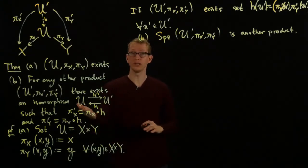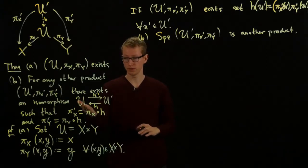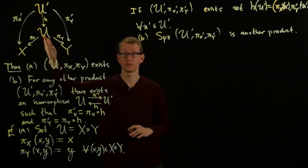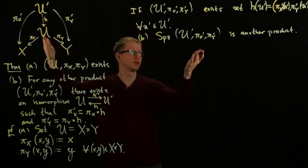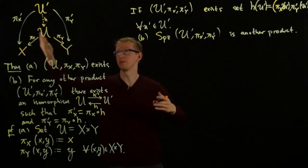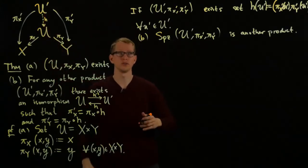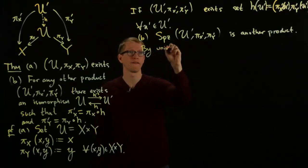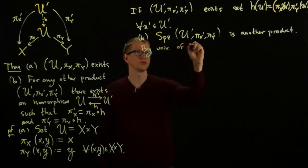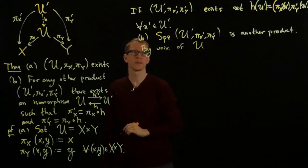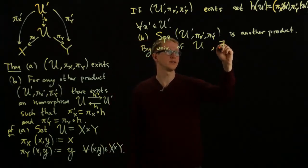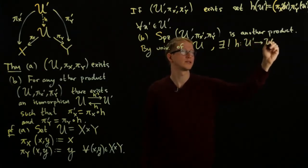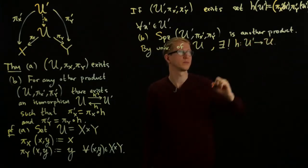And what we want to do is we want to show that there's an isomorphism. Now, because U is a universal, is characterized by universal property, we know that we have such an H. Because U prime is in particular, has these maps to X and Y, so we know that there exists a unique map to U. So by universality of U, and πX and πY, there exists a unique map, H from U prime to U, such that the required diagram commutes.